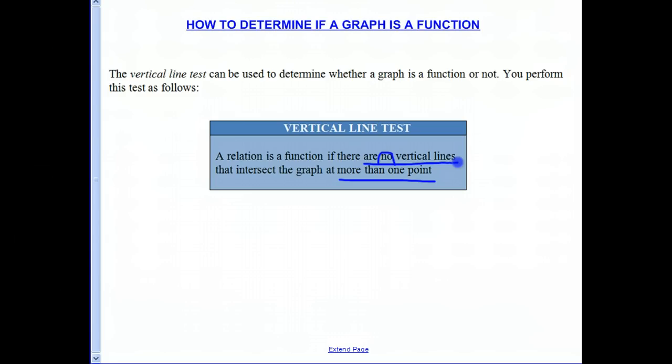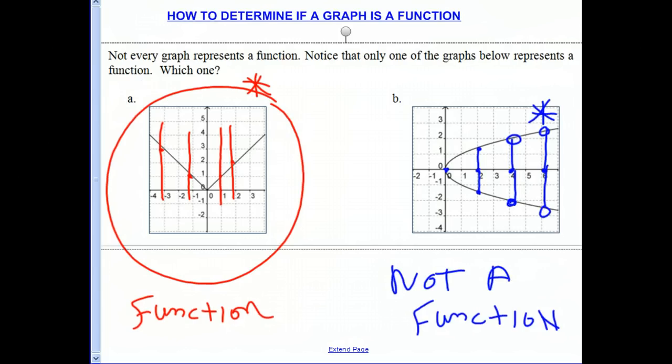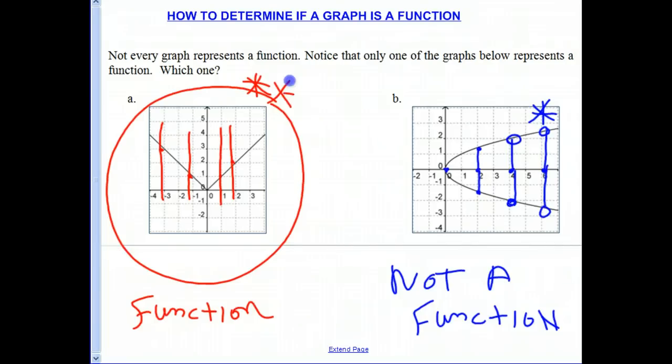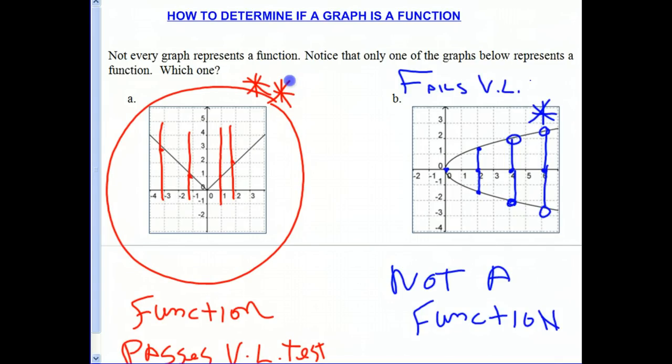So let's go back to those other graphs again. And using that vertical line test, you'll notice that the graph on the left passes the vertical line test, and you'll notice this graph on the right fails the vertical line test.